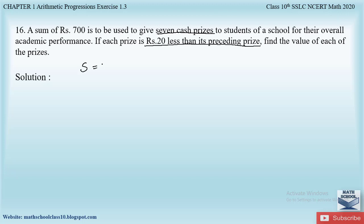What is given: the sum equals 700, the number of prizes n = 7, and each prize is rupees 20 less than its preceding prize, so the common difference d = −20. We have to form an AP and find the value of each prize.